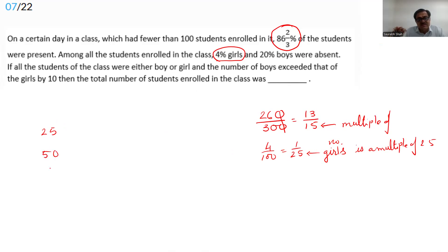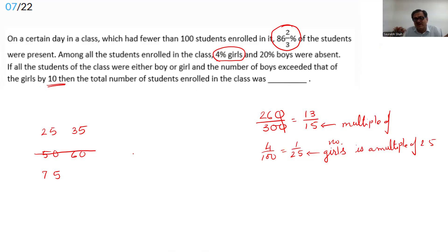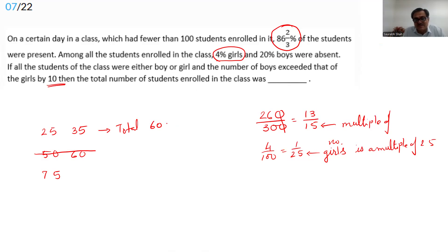The number of boys exceeds girls by 10. If there are 25 girls, there are 35 boys — total 60, which is a multiple of 15. If there are 50 girls, there are 60 boys — total 110, which exceeds 100, so it's ruled out. The only valid case is 25 girls and 35 boys, giving a total of 60. Verification: 60 × (2/15) = 8 students absent.